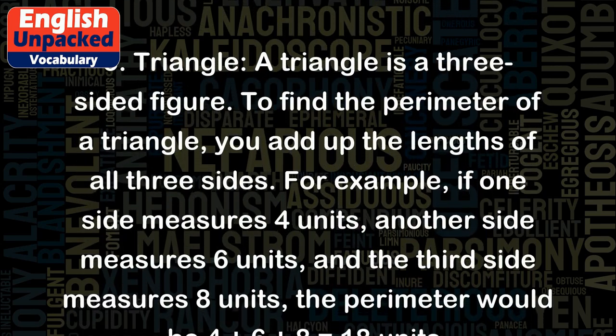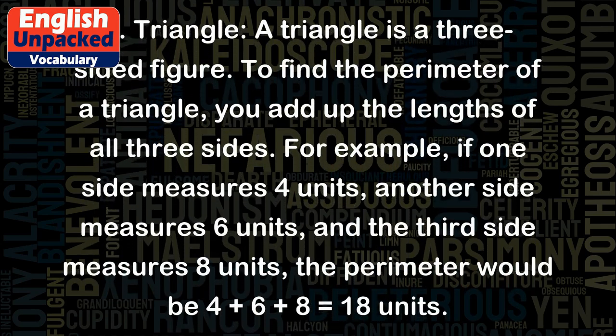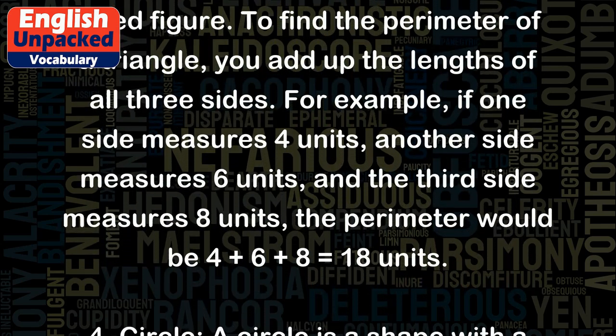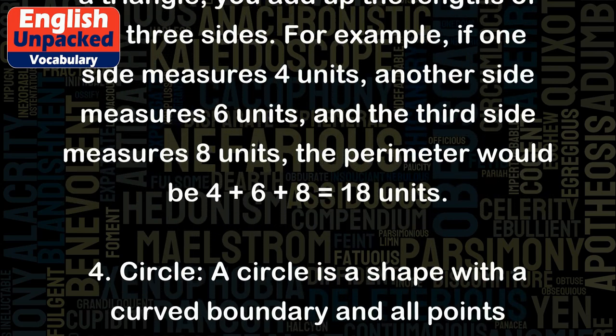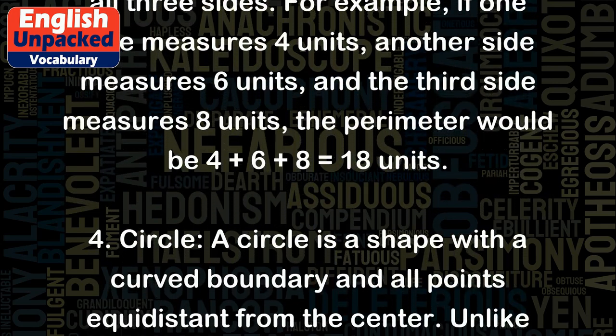For example, if one side measures 4 units, another side measures 6 units, and the third side measures 8 units, the perimeter would be 4 plus 6 plus 8 equals 18 units.